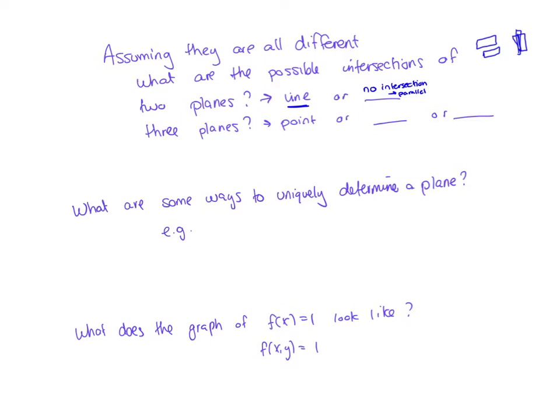Now if I have three planes, the situation can be a little bit different. I could have a point where all three come together, I can have a line where all three come together, or I can have no intersection. I encourage you to take a couple seconds and think about what all of those situations would look like.